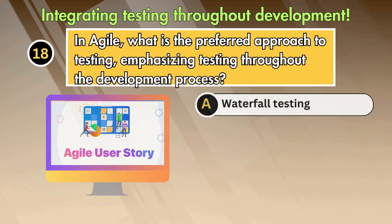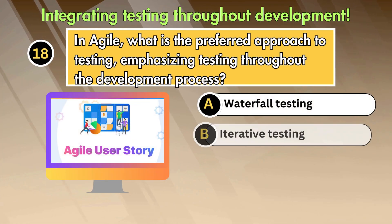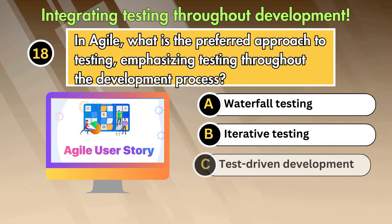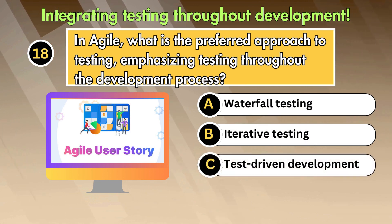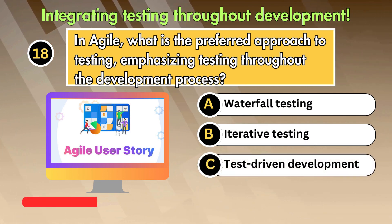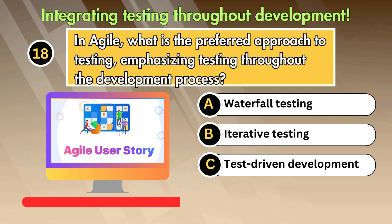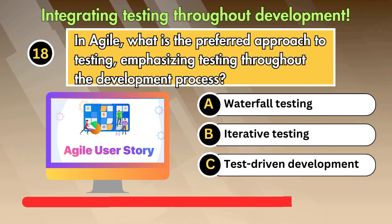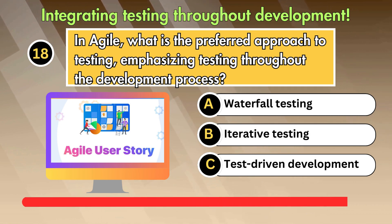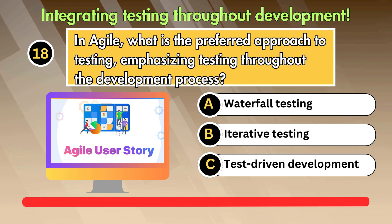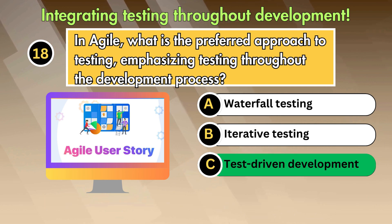In agile, what is the preferred approach to testing, emphasizing testing throughout the development process? Option 1: Waterfall testing. Option 2: Iterative testing. Option 3: Test driven development. Answer is Test driven development.